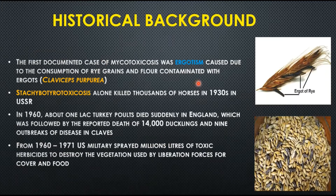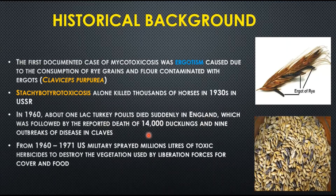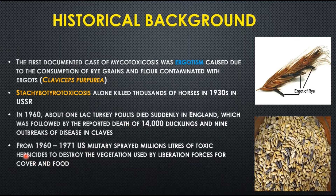The first documented case of mycotoxins was ergotism, caused by the consumption of rye grains and flour contaminated with ergots produced by Claviceps purpurea, which produces a type of alkaloids. Then in the 1930s, stachybotryotoxicosis killed thousands of horses in the USSR. In 1960, about one lakh turkey poults died suddenly in England, followed by the reported death of 14,000 ducklings and nine outbreaks of disease in cows — all due to an unknown toxin.